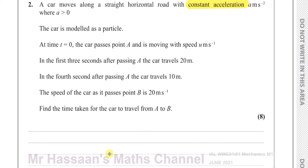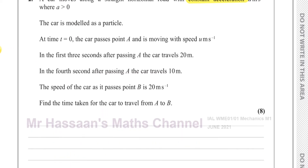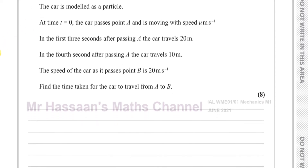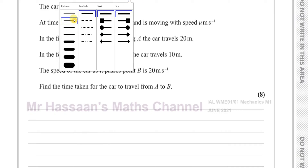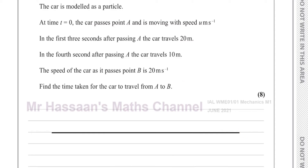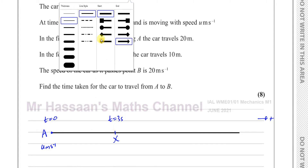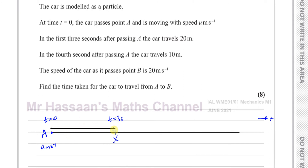That's very important. Let's make a little diagram to make things clear. At t equals zero, the car passes point A moving in the positive direction with speed U meters per second. In the first three seconds after passing A, it travels 20 meters — so let's call that point X. The distance between A and X is 20 meters.